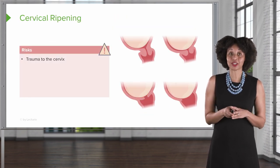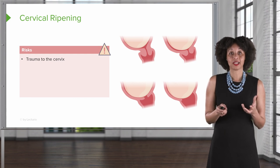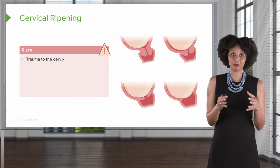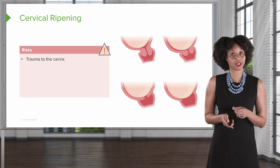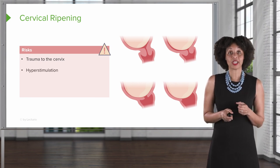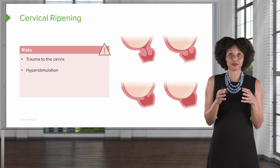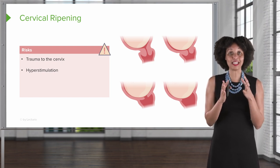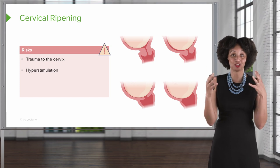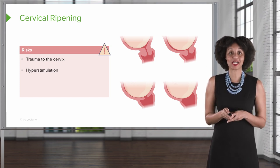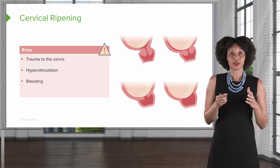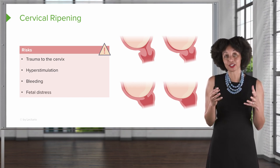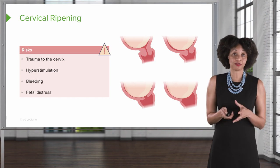What are the risks of cervical ripening? Anytime we use a mechanical device to open something that's closed, there's a potential for trauma. As we begin to open the cervix, oxytocin released from the cervix can cause the uterus to contract too much — that's called hyperstimulation. There could also be bleeding, and if we overstimulate the uterus, there can be fetal distress.